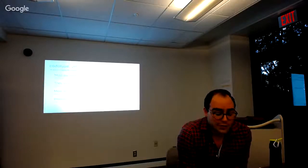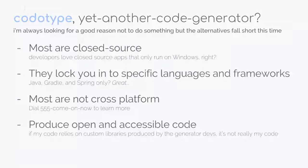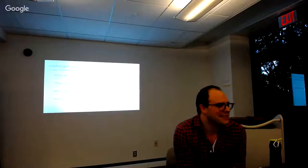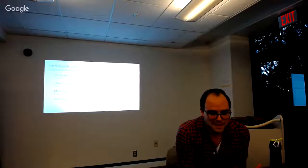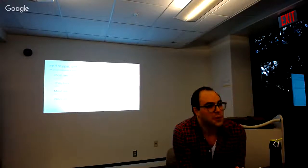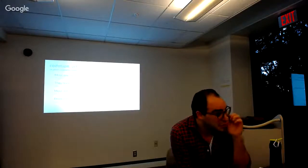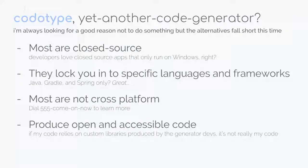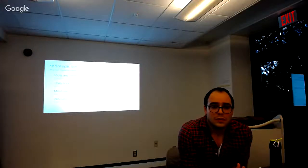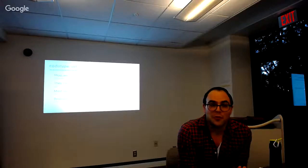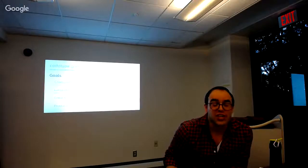A lot of existing tools lock you into specific tools and languages and frameworks — there are code generation tools that only generate Java 7 code with Spring. Another problem is that many tools aren't cross-platform — you have to install it on Windows and only use it on Windows. That's not where the software development ecosystem is at. Most people don't want native apps installed; they're running on many different operating systems. Codotype is also open to various languages and frameworks — was making it cross-platform a lot of extra effort compared to existing schemes? Honestly, it was pretty low-hanging fruit.